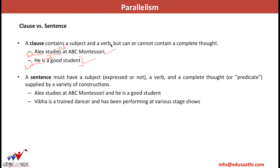Whereas a sentence has a subject, a verb, and it also gives a complete thought. For example, if I join the above two clauses to form a sentence: 'Alex studies at ABC Montessori and he is a good student.' Here 'he' obviously points to Alex, giving a complete picture about who studies at ABC Montessori and who is a good student. Thus a sentence signifies a complete thought, whereas a clause might not.